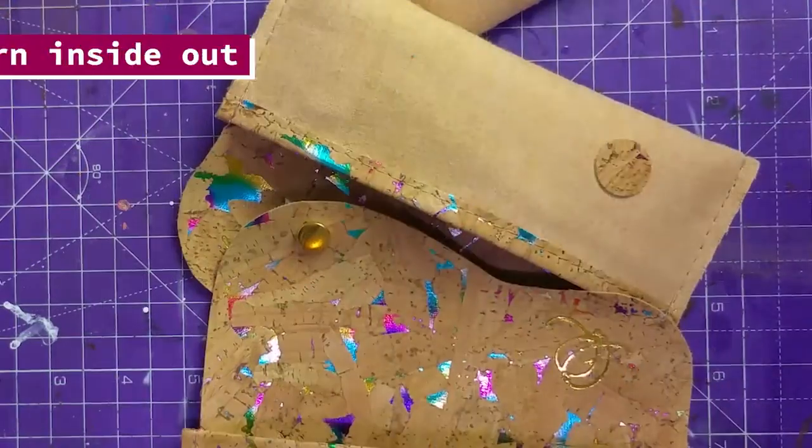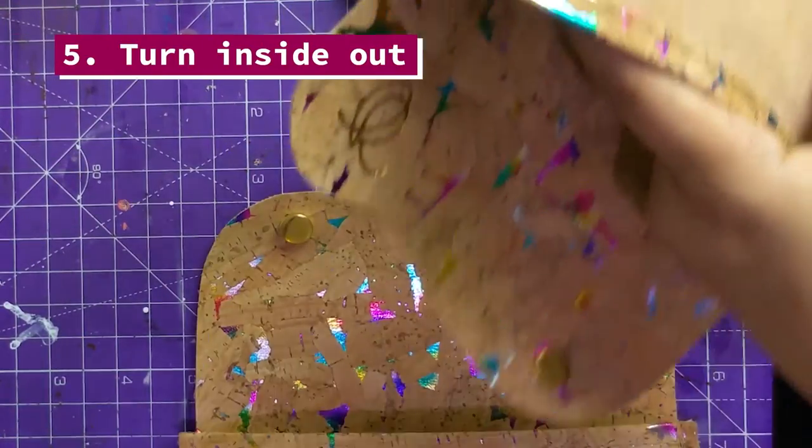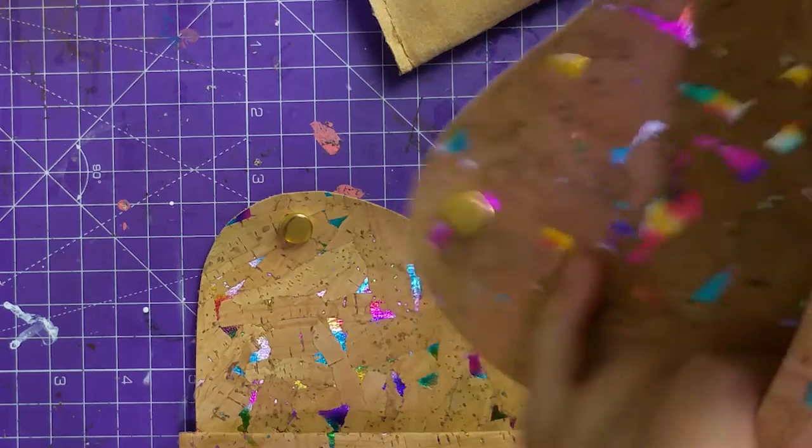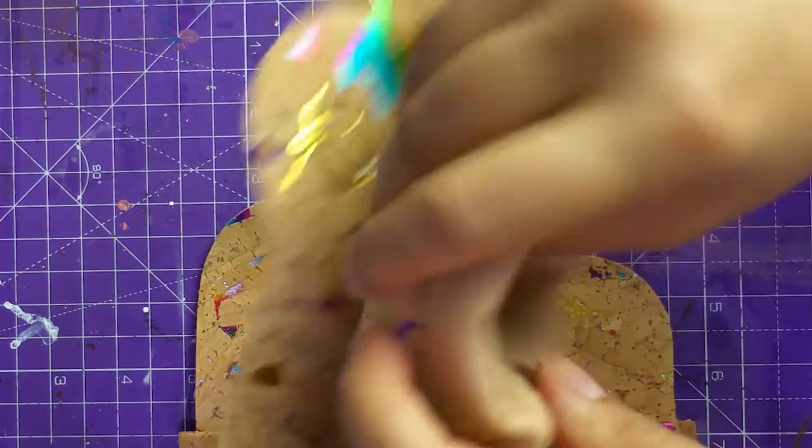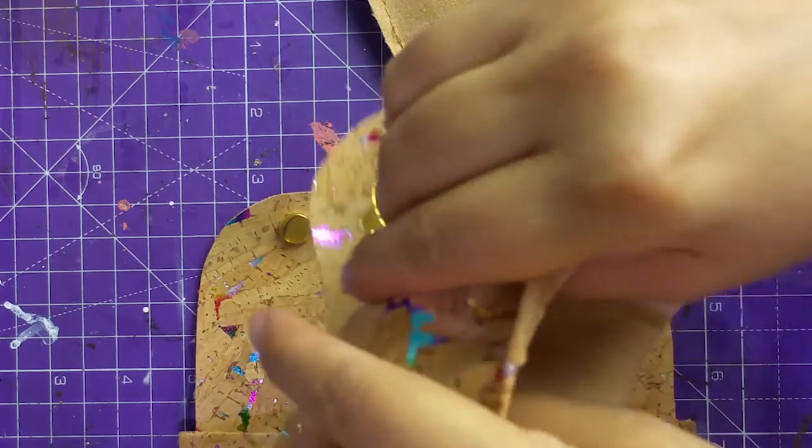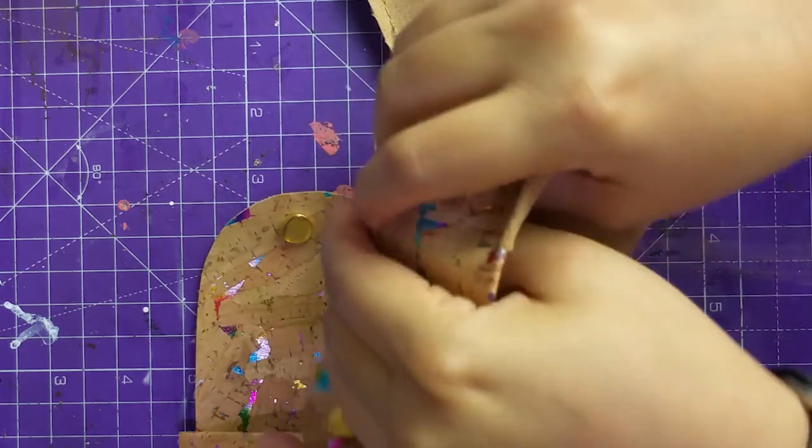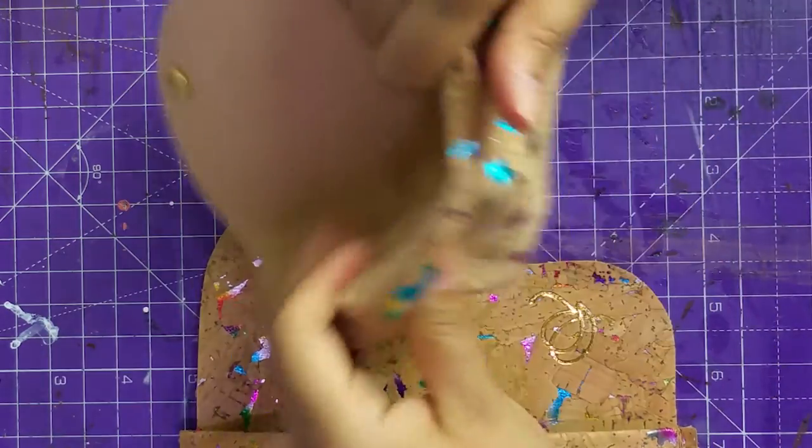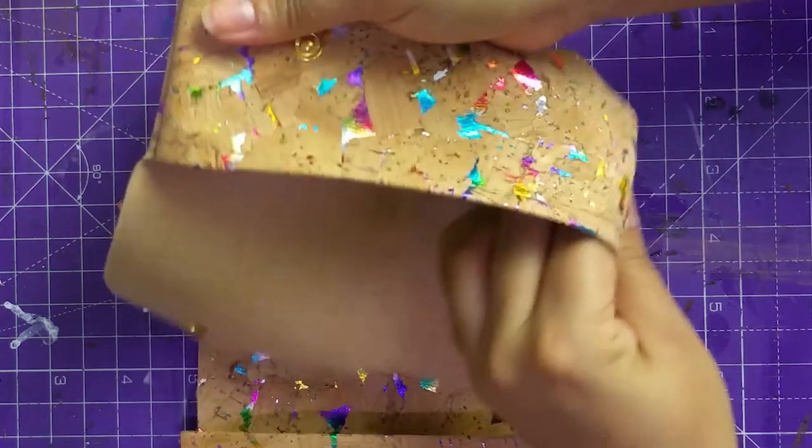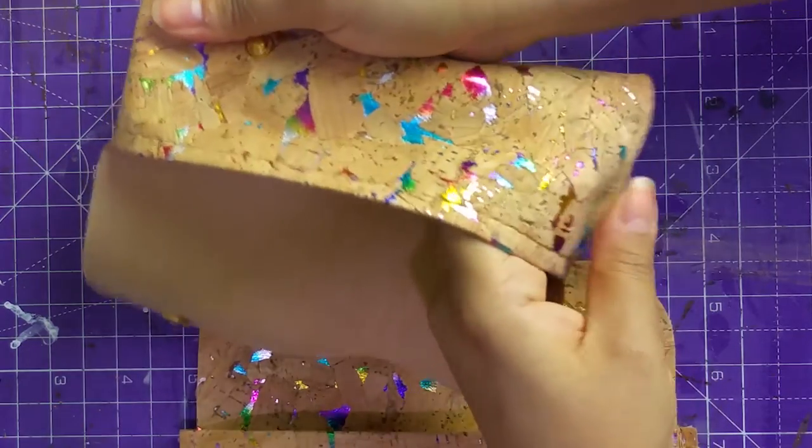Finally, this is a very satisfying step when pretty much you're done. All you have to do is turn your case inside out. You might also want to use the bone folder so that you can catch all the corners and really push them completely out, and then you're done.